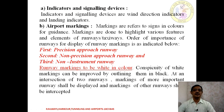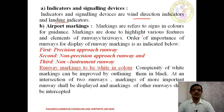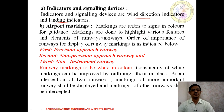Moving on to the first type — indicators and signaling devices. These are always used to indicate the wind direction and also the landing indicator. These two are the indicator signaling devices installed at an airport. Airport markings refer to signs in different colors for guidance purposes. These markings highlight the various features of each element with respect to the runway or taxiway.